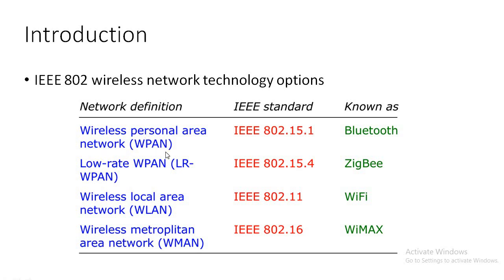The wireless personal area network, also known as WPAN, uses the IEEE 802.15.1 standard and this technology is known as Bluetooth. The other is low rate wireless personal area network, using the IEEE 802.15.4 standard, and this technology is known as Zigbee.